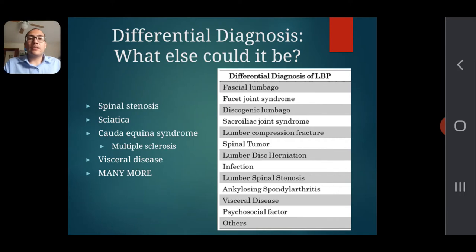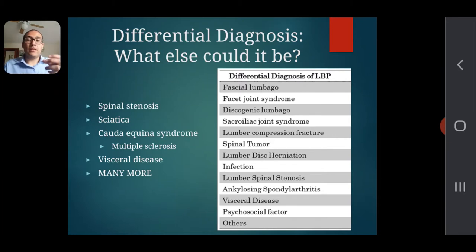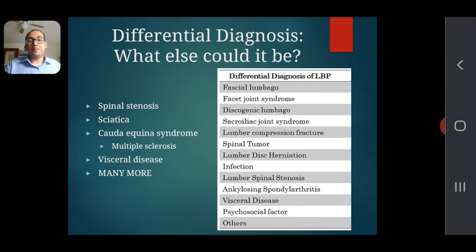For differential diagnosis — what else could it be — the most common one is spinal stenosis, which is when the space of the spine is narrowing. That can lead to conditions like back pain and typically happens in the lumbar area.